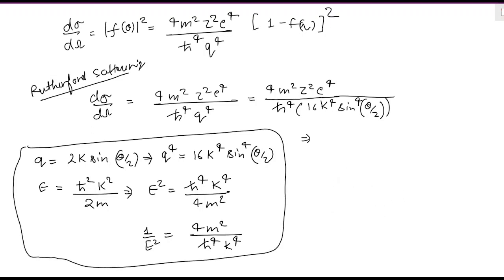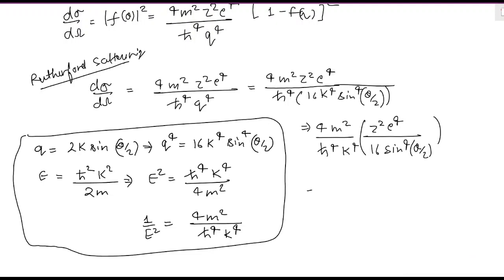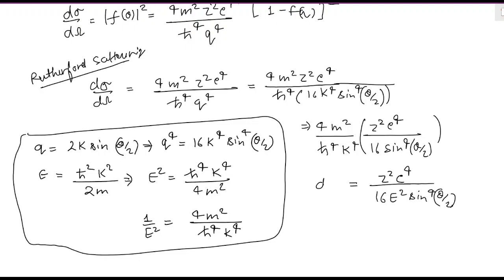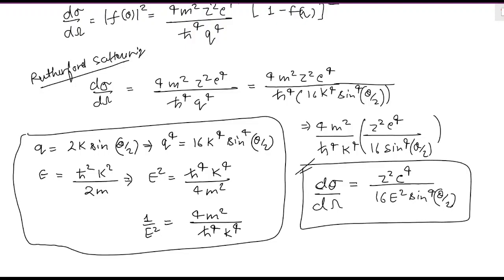We see that the factor 4m² divided by ℏ⁴·k⁴ equals 1/E². Substituting this replacement, we get dσ/dΩ = Z²·e⁴ divided by 16·E²·sin⁴(θ/2). This is the Rutherford scattering formula derived using the Born approximation applied to the Screened Coulomb Potential. That's all for today, thank you very much.